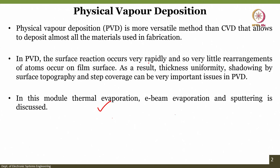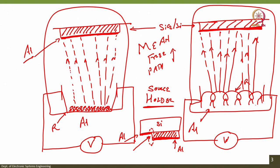In this module we understand three techniques: thermal evaporation, E-beam evaporation, and sputtering. If I say I am going to deposit 1 micron of aluminum, how would I know it has reached 1 micron? We can use the principle of piezoelectricity. A material called quartz — a quartz crystal — can be used to measure the thickness of the deposited material.